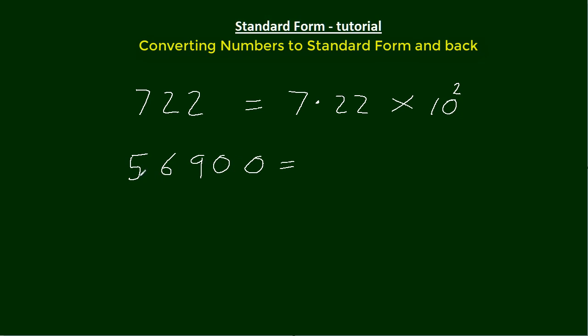This one, we need a number between 1 and 10, so we're going to end up with 5.6, and we add these other numbers on. Once we get the trailing zeros we can stop, and it's going to be times 10.